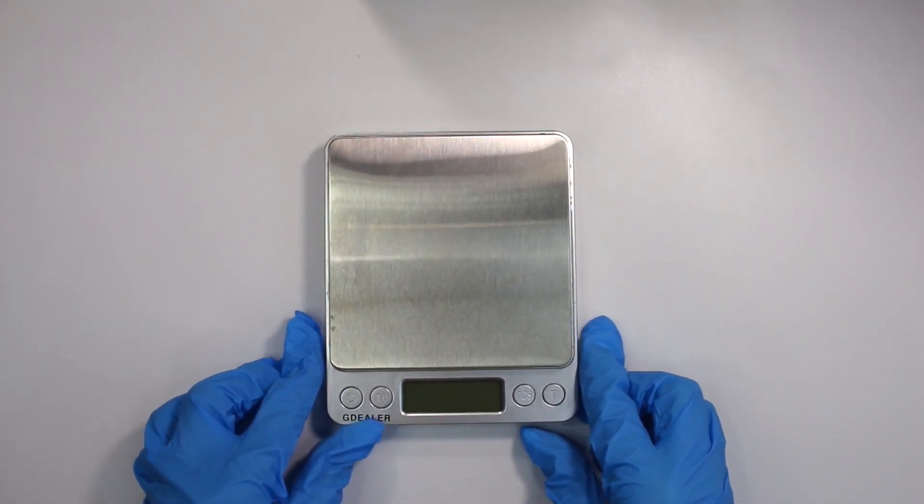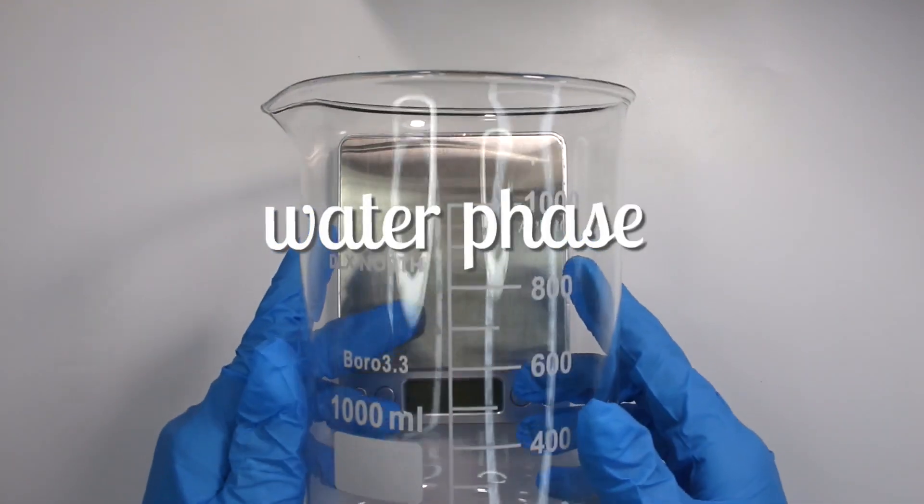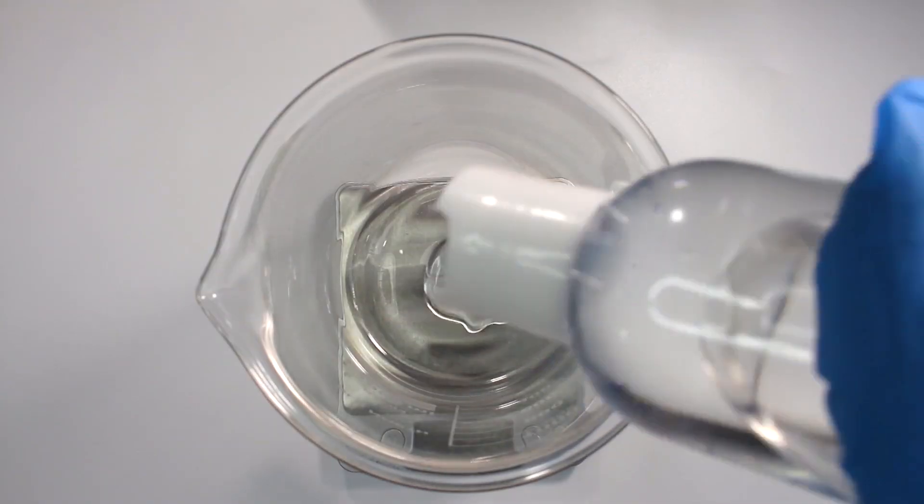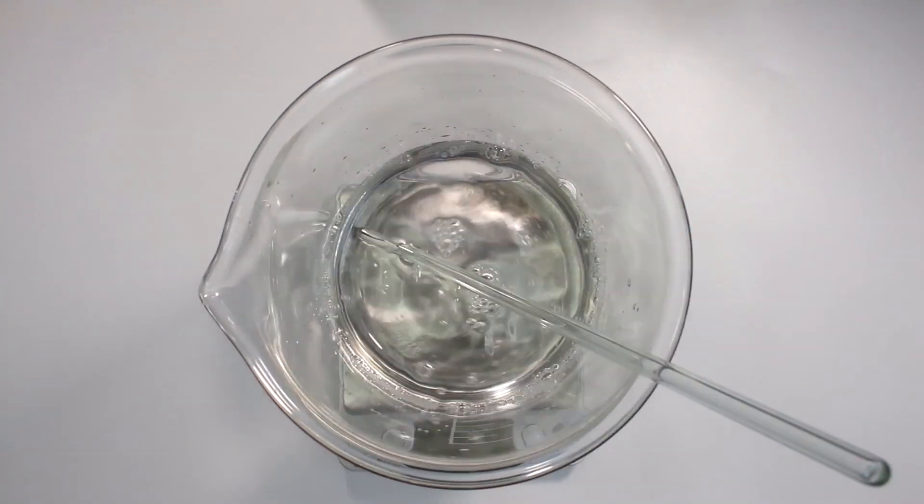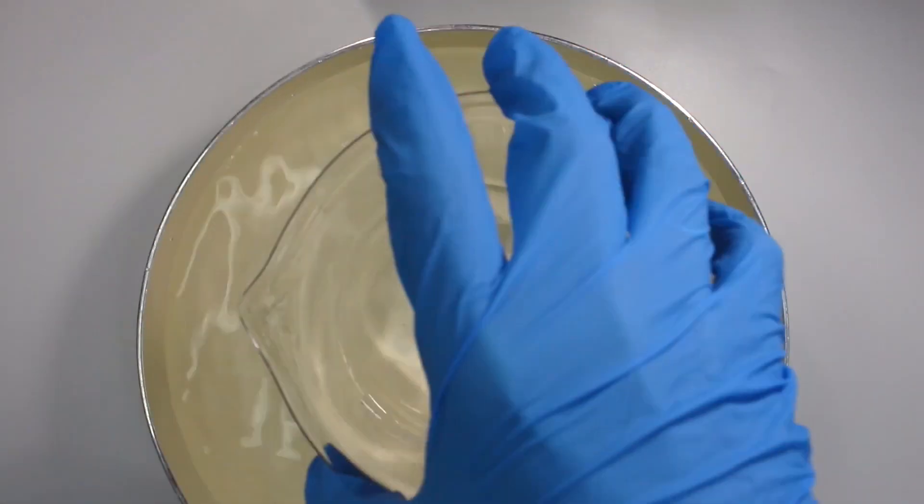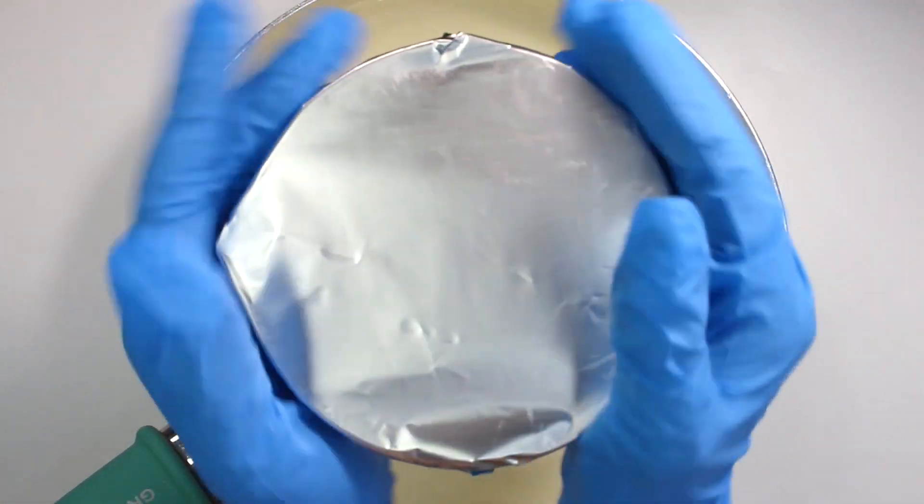So of course I start out with my digital scale that weighs to 0.01 grams and I start with my 1000ml glass beaker and I weigh out my water phase ingredients. So then I will place my beaker in a pan, cover it with aluminum foil,